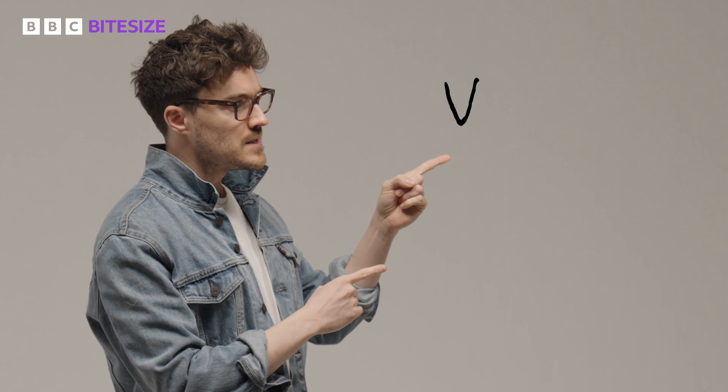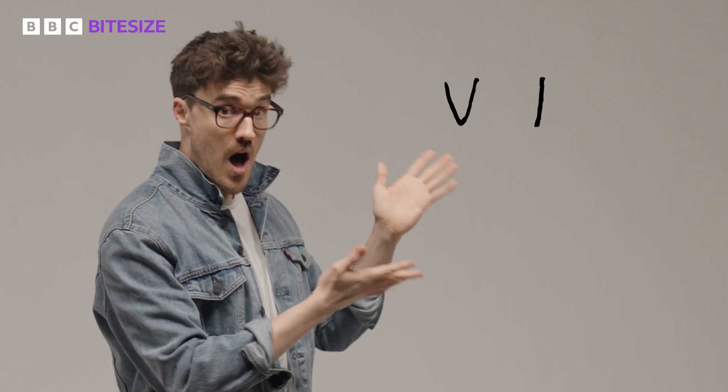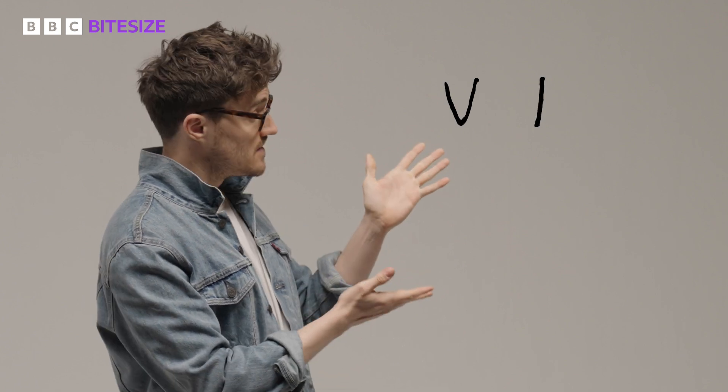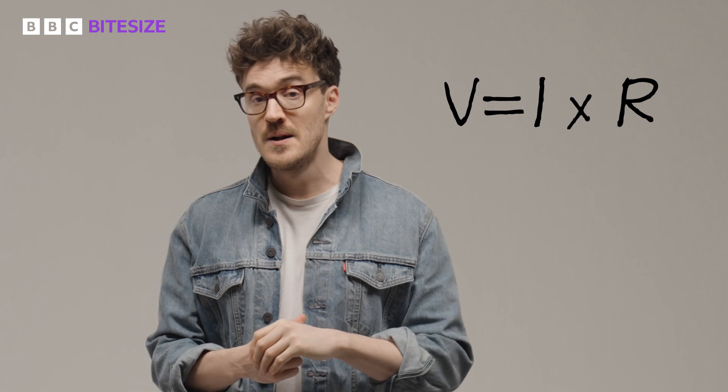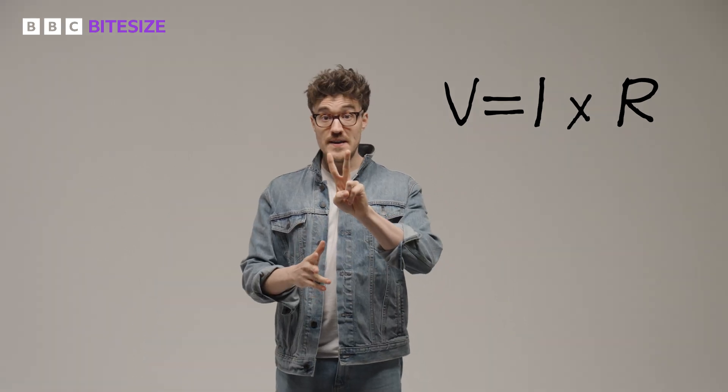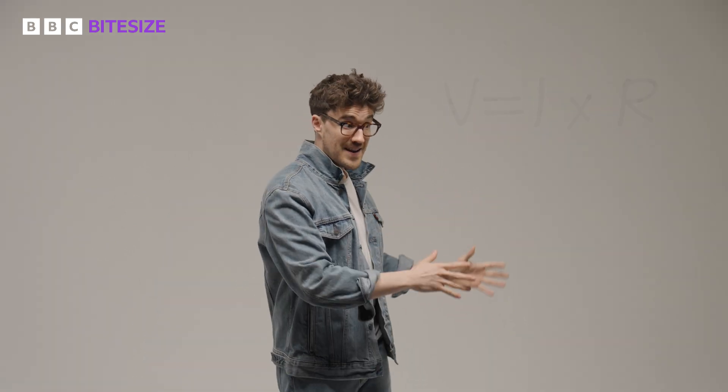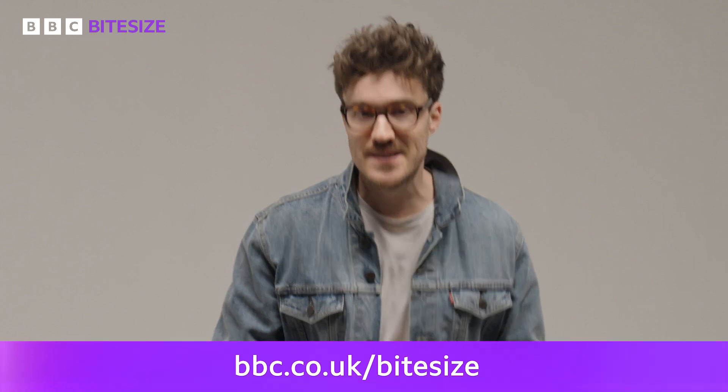Resistance is measured in ohms, and Ohm's Law gives us a very handy equation to calculate voltage V, current I, and resistance R: V equals I times R. So if you know any two of these values, you can calculate the third. It is the ultimate electrical cheat sheet. To find out more about ohms and resistance, head to the BBC Bitesize website — all the info you need is below.